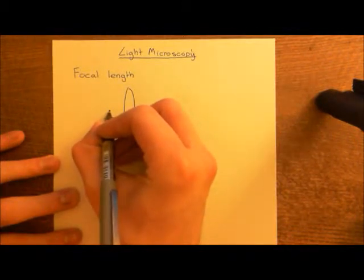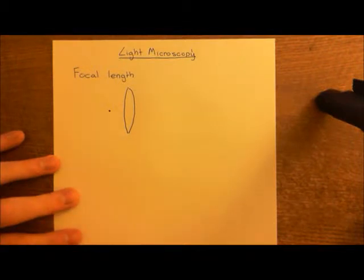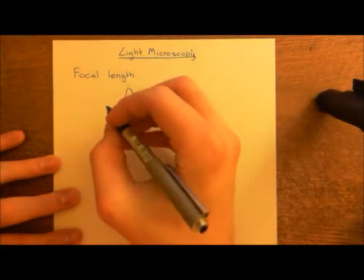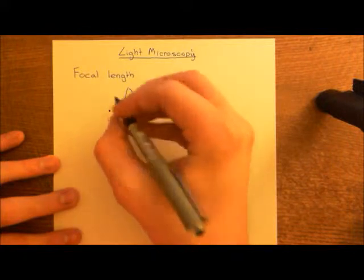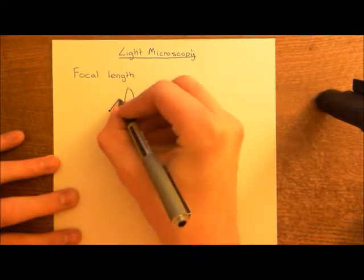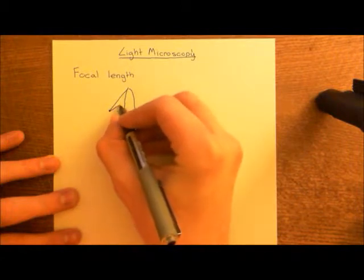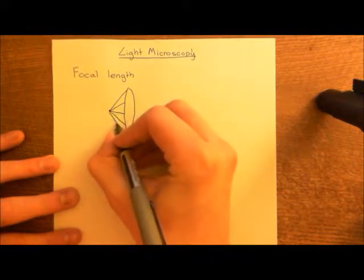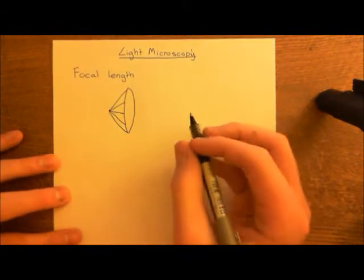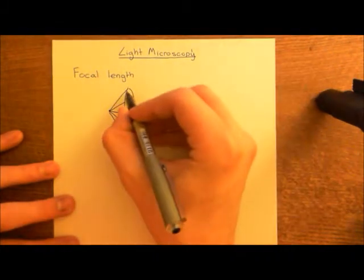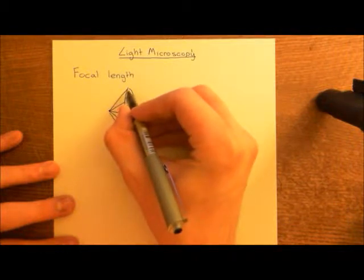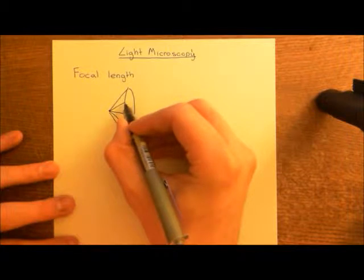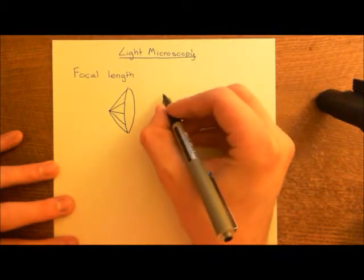Let's start by taking a point here. We're in the world of maths, so we're going to say this is a minuscule, infinitesimal little point, and it's a point source of light. Light is going to come out from this source in all directions - you get light rays going in all directions. So I'll draw one here, another one here, another one here, and another one here. What happens is when the light hits the glass, it's going to refract.